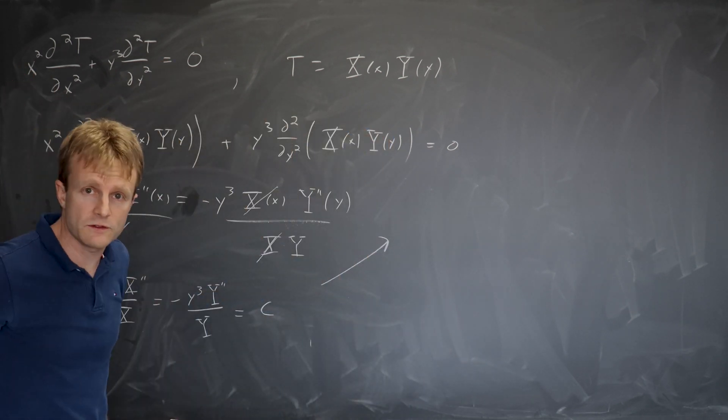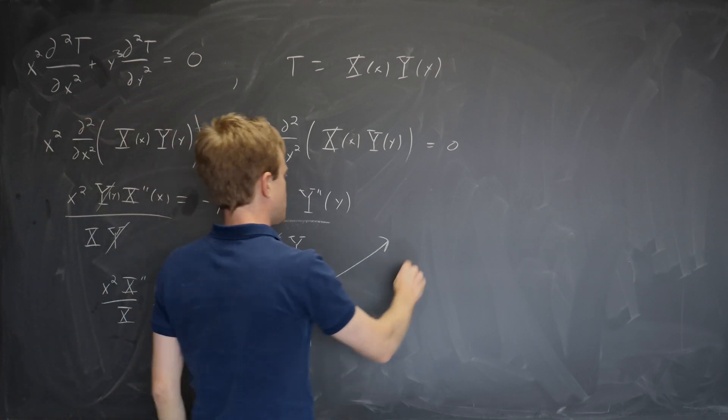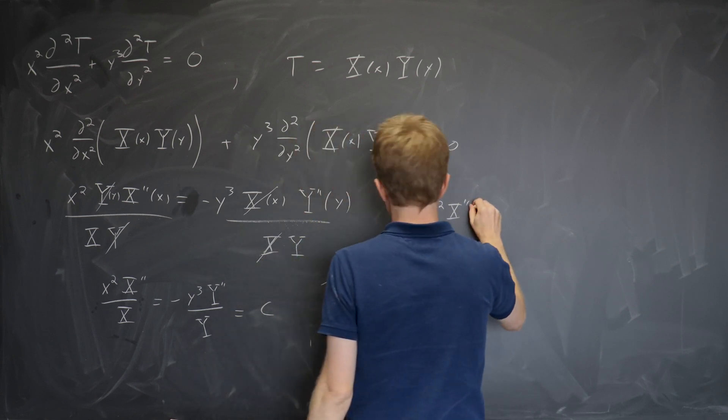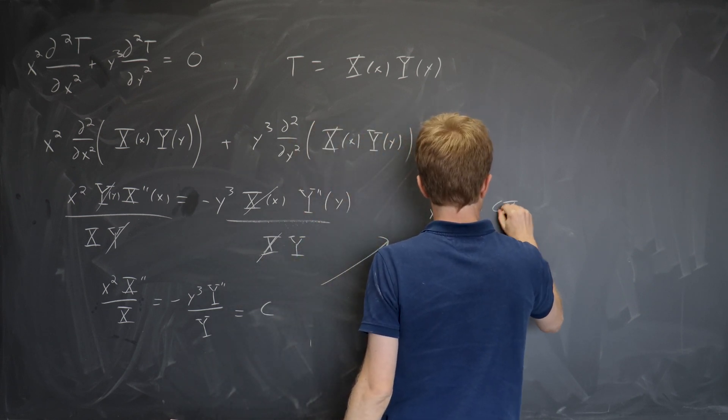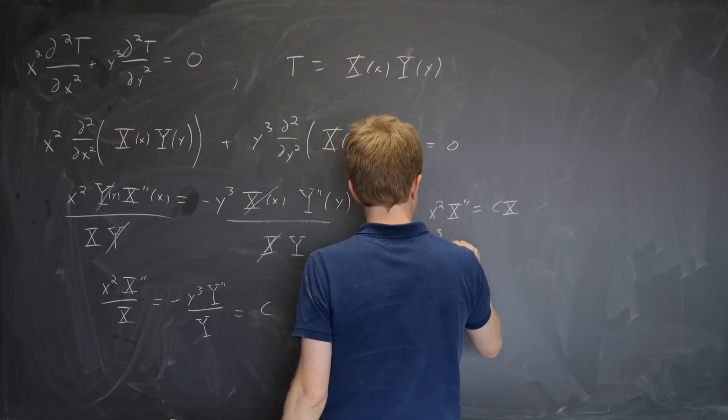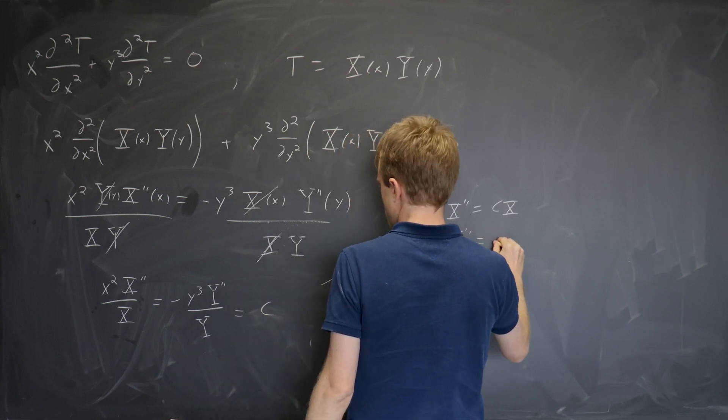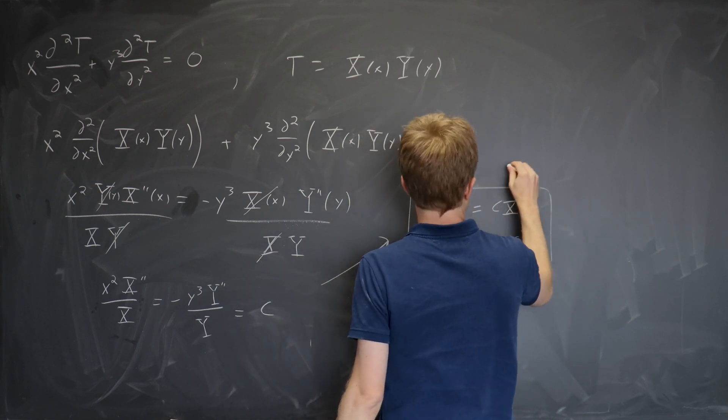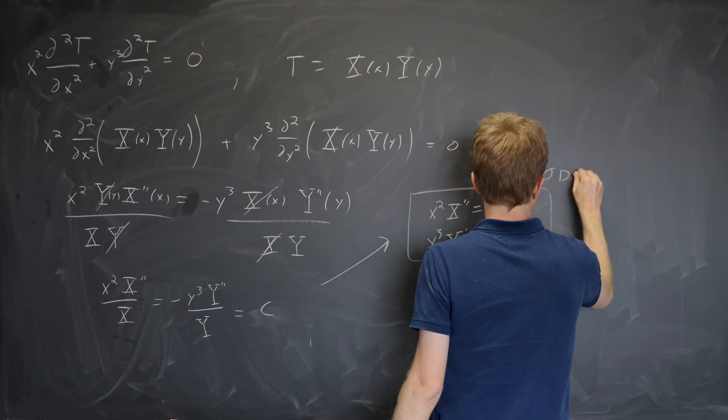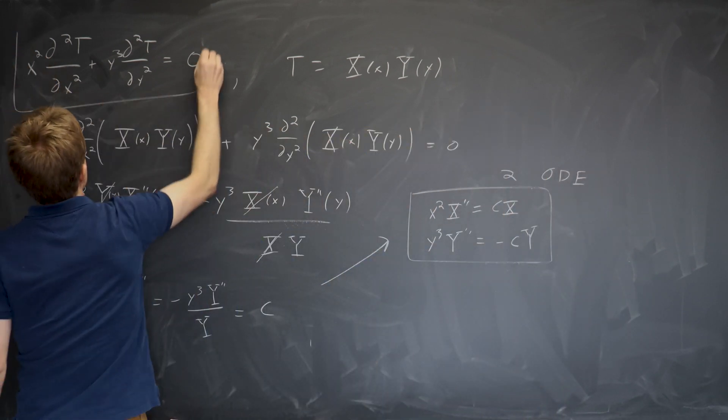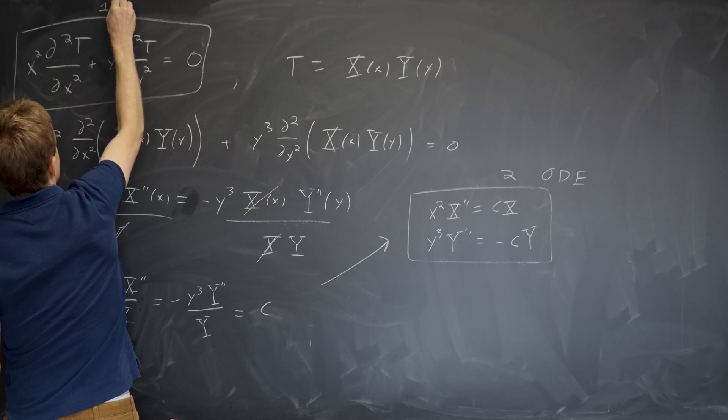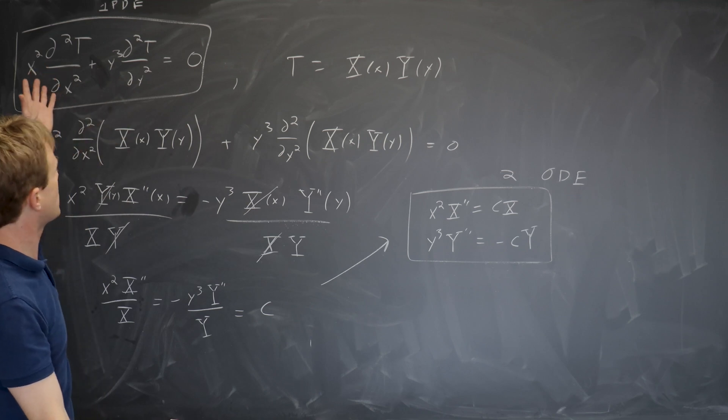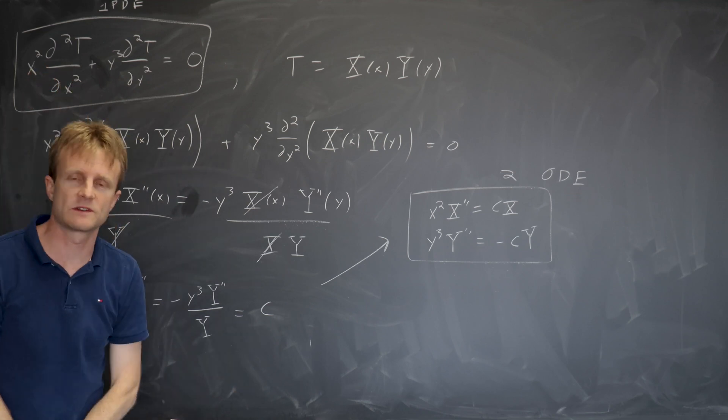And now I've created two. I've taken my single partial differential equation and I've created two ordinary differential equations, namely x squared capital X double prime equals c capital X and y cubed capital Y double prime equals minus c capital Y. Like two ordinary differential equations starting from our one partial differential equation. So the equation was a little more complicated than Laplace's equation, but the same series of steps works.